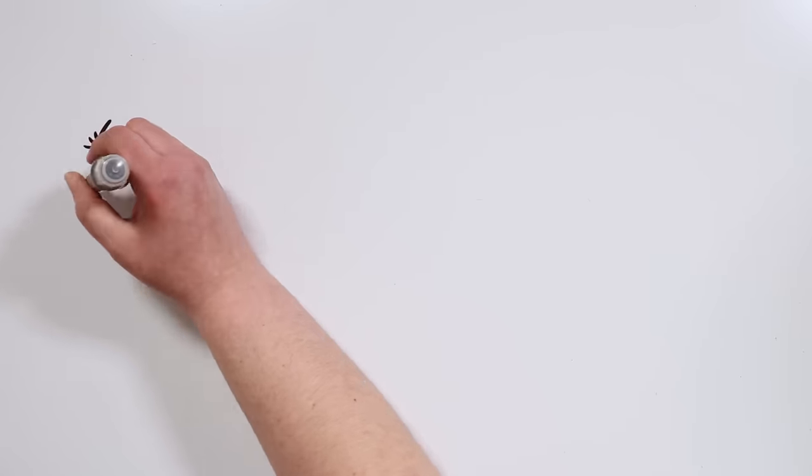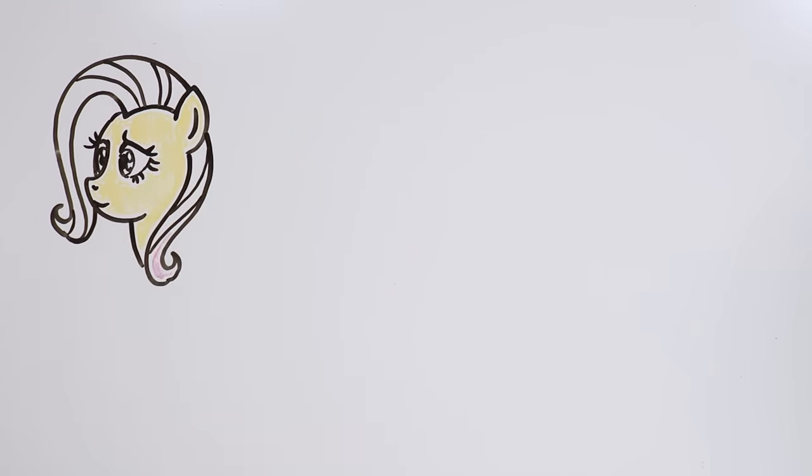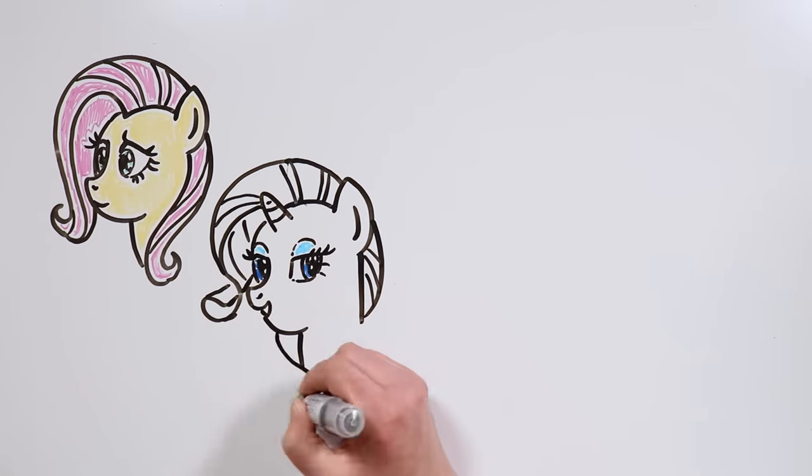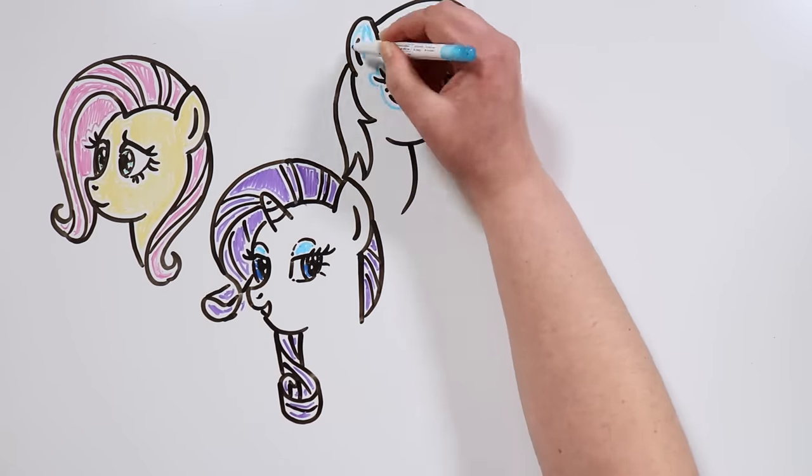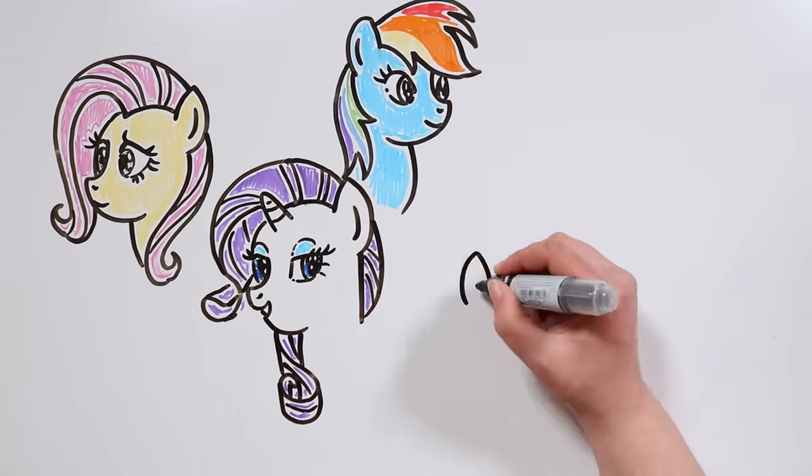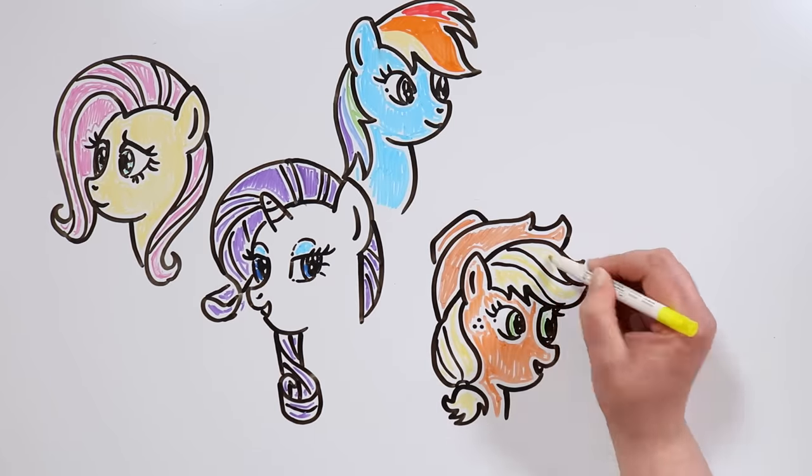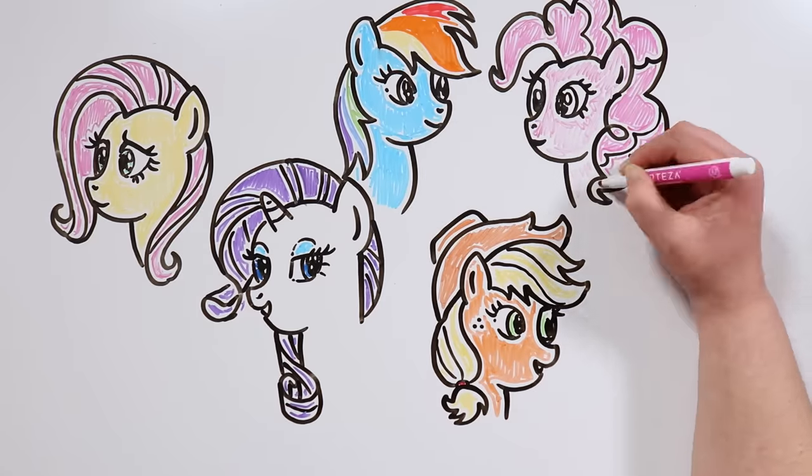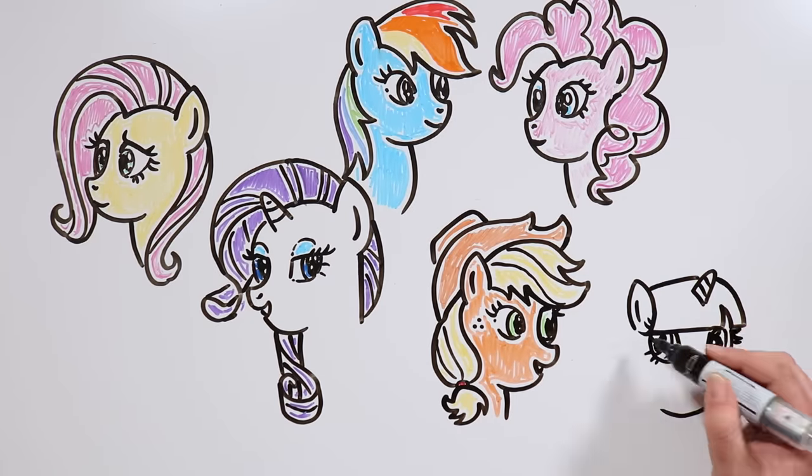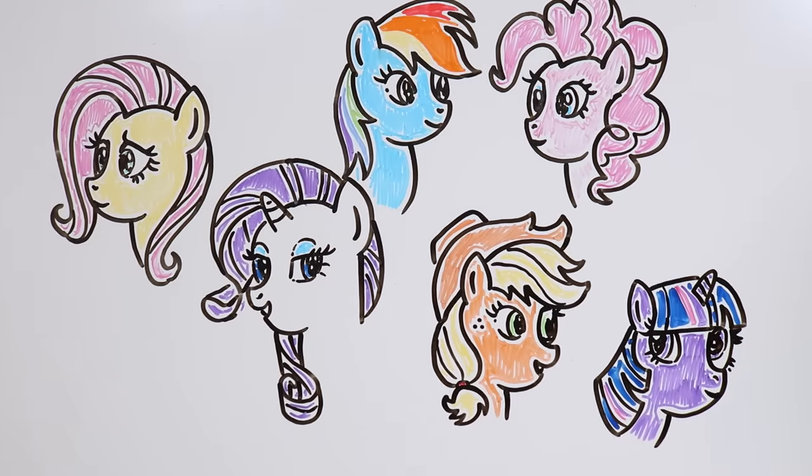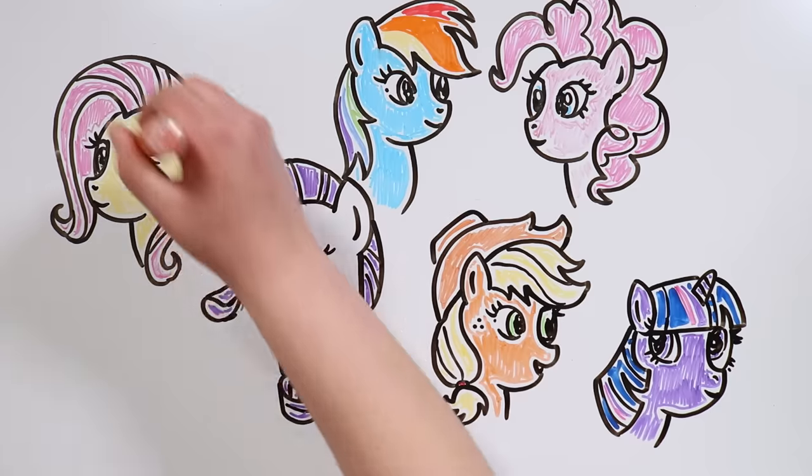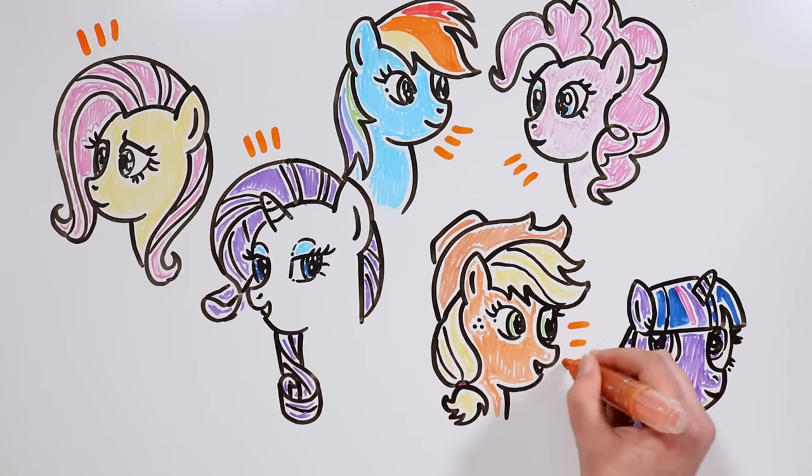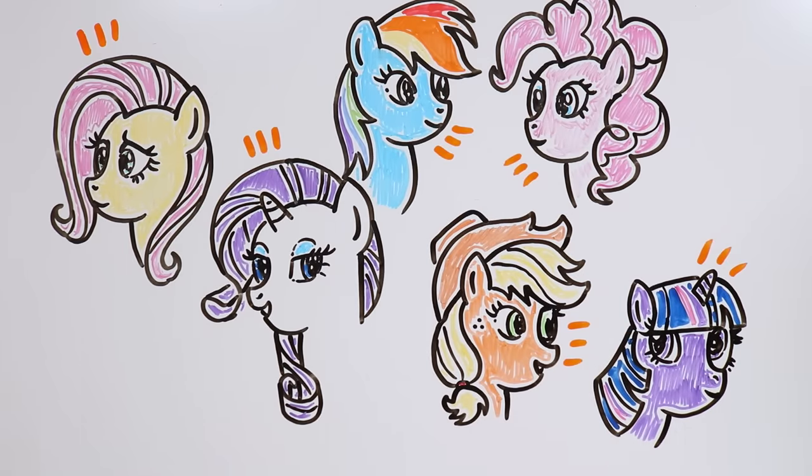And now, think about the main characters of the show. Fluttershy takes care of the animals she loves. Rarity is a successful designer with loving parents. Rainbow Dash is a great athlete. Applejack has a successful apple farm. Pinkie Pie is a happy and carefree party planner. And Twilight Sparkle was accepted in a prestigious magic school before moving to Ponyville. It's kind of like the creators of the show wanted to give to the tormented spirits of those poor girls… all the things they wanted, but couldn't get in life.